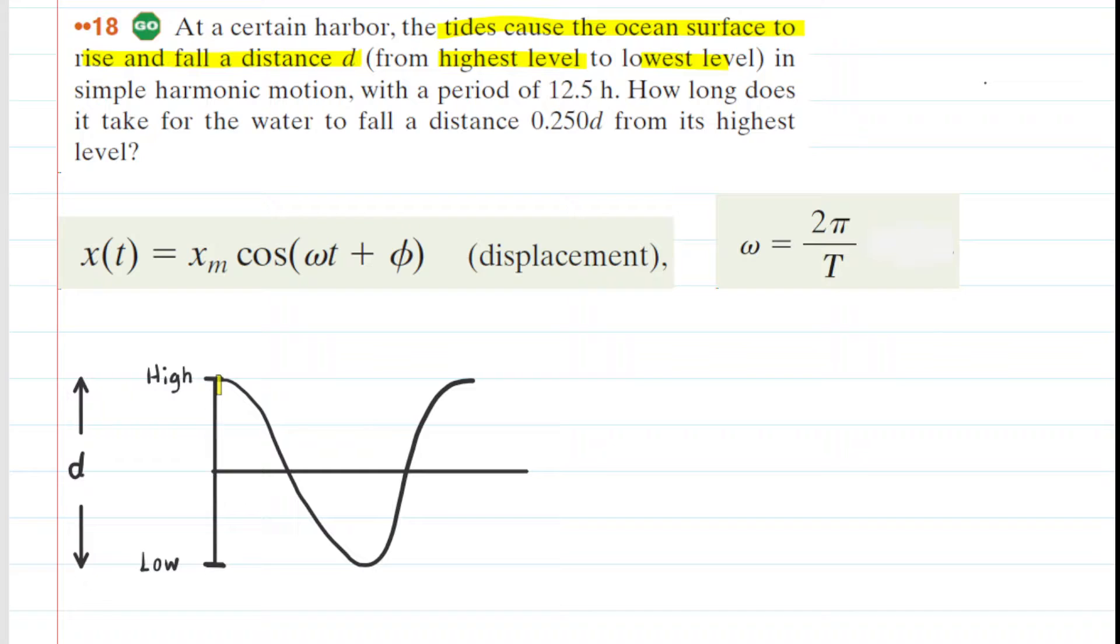So we've sketched a graph showing the motion of this tide, and from the highest level of the tide to the lowest level, the water falls a distance d. And by sketching this graph, we should be able to see what the amplitude of the tide will be.